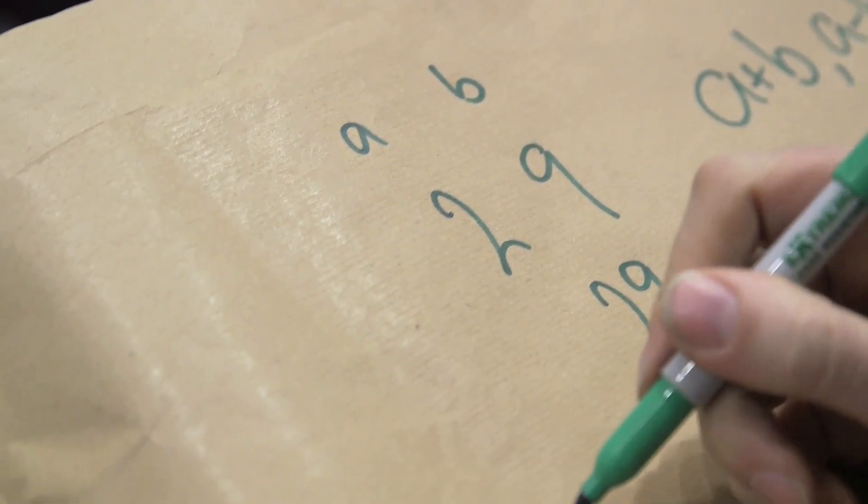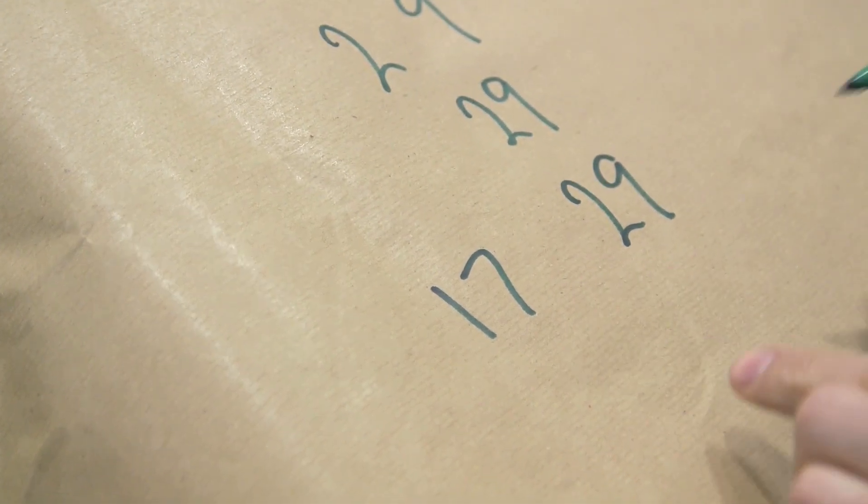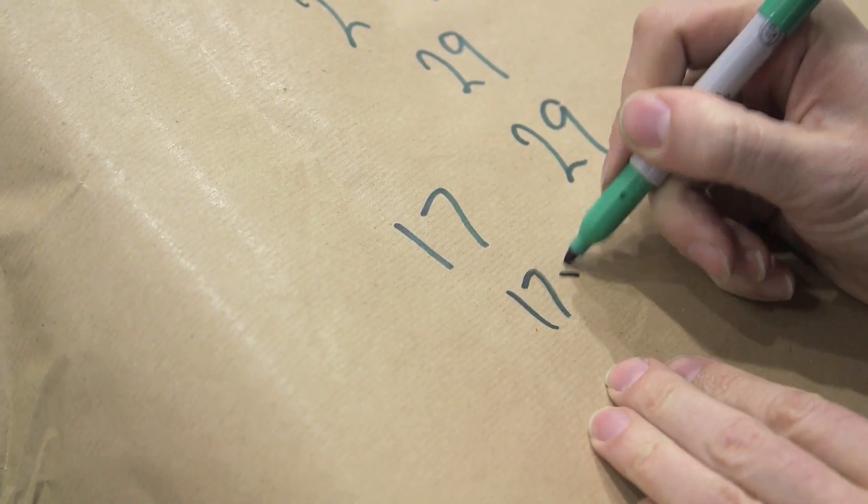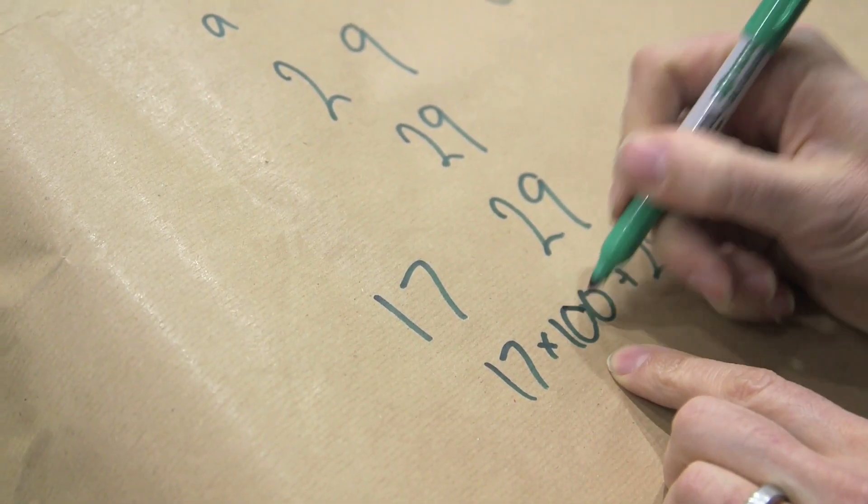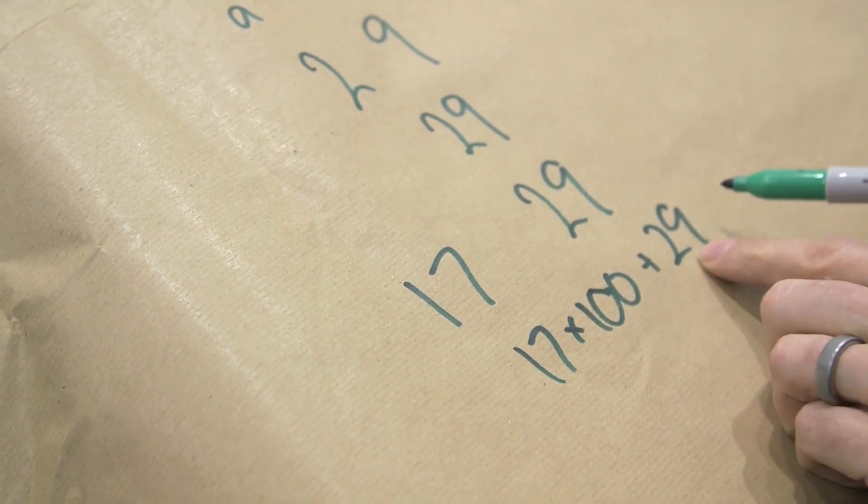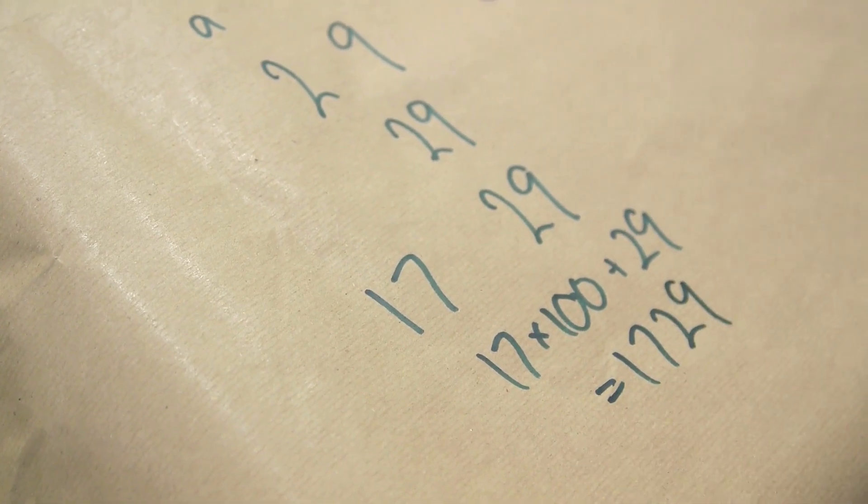But what if it was more complicated? What if you had 17 and 29 and now you want to concatenate those? Well, actually, what you're doing is 17 times 100 plus 29. So actually, you've got to multiply it by enough tens to make enough room on the end to get the concatenated results. That's what you're doing.